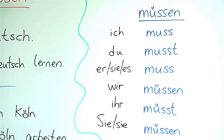For ich — I — I must, I will say ich muss. Ich muss for 'I must.' For the second singular form, I will say du musst — 'you must.' Er muss, sie muss, es muss. Er stands for 'he' but also the der article. Sie stands for 'she' but also the die article. Es is for 'it' but also the das article. So er, sie, es will be conjugated with muss.